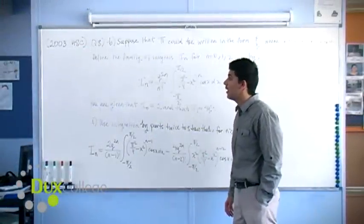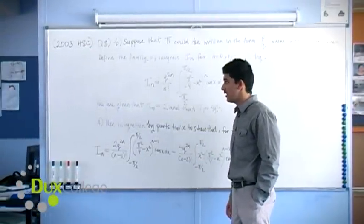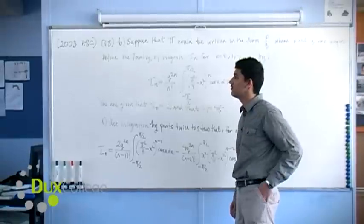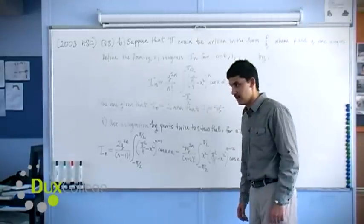Today we're going to look at question 8, part b of the 2003 HSC paper. It's a proof by contradiction that pi is irrational.